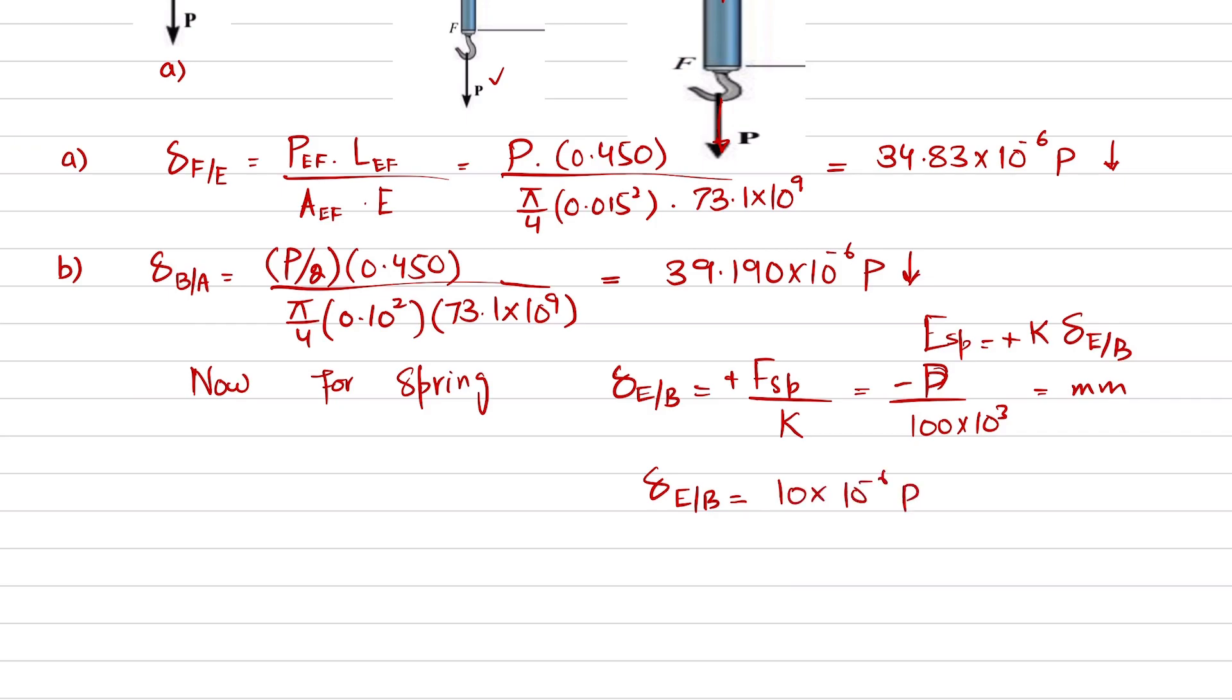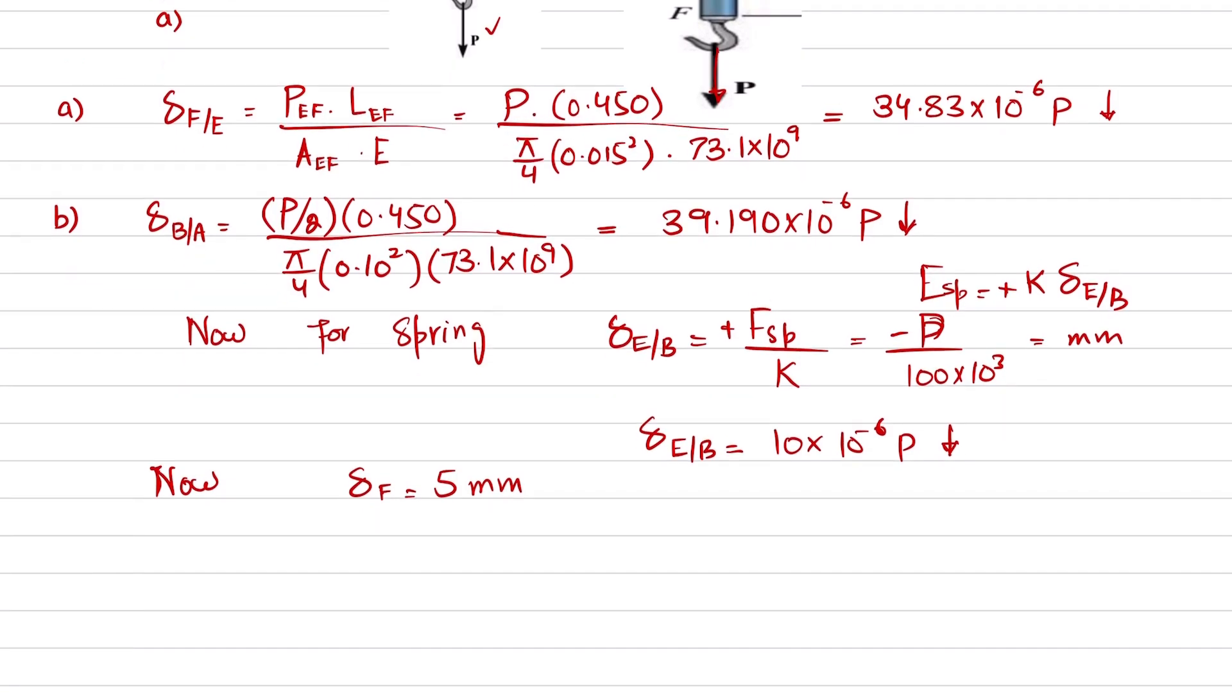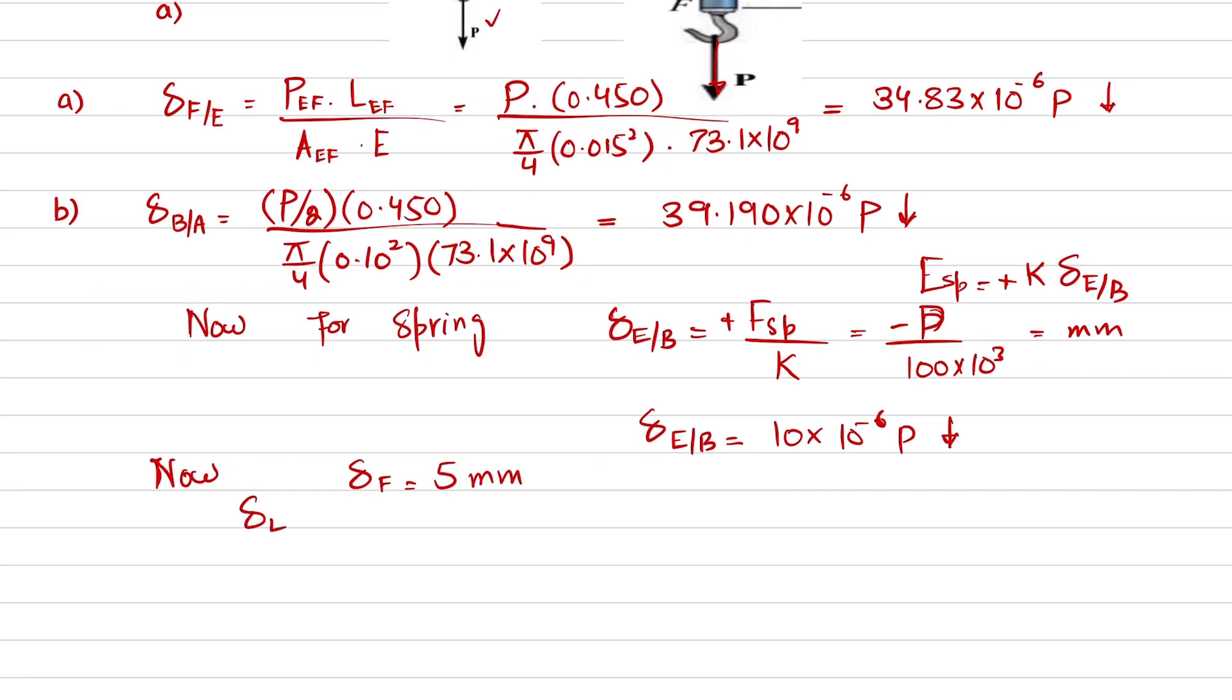Now we have been given that the point F moves 5 millimeters downward, and this 5 millimeter downward movement of point F will include the change in length of rod EF, AB, and this spring. So I will write change of F with respect to E plus change of B with respect to A plus change of E with respect to B is equal to 5 millimeters.